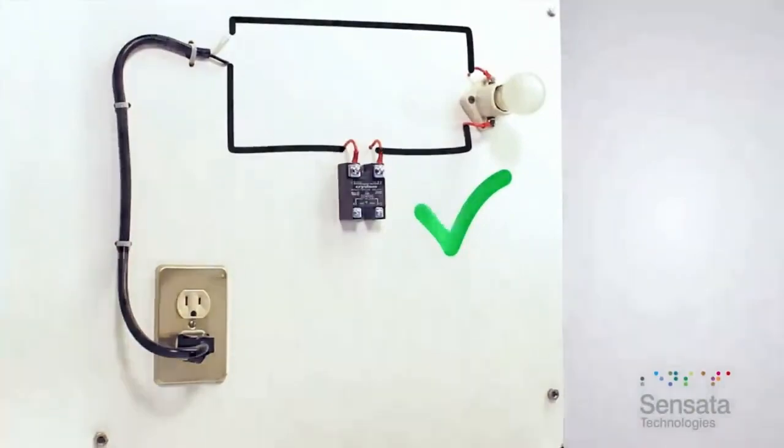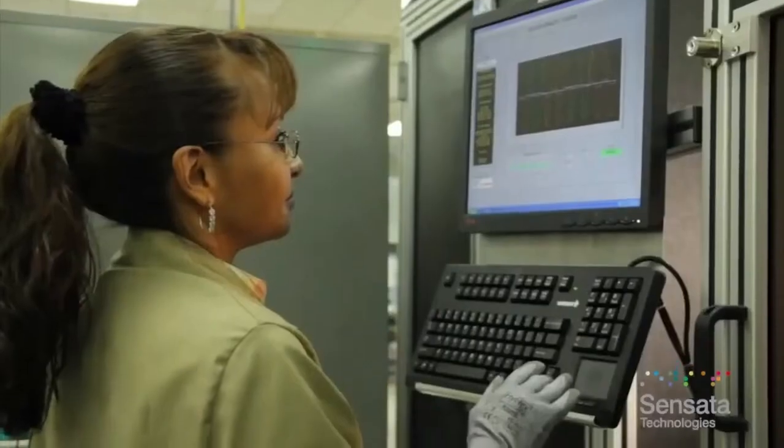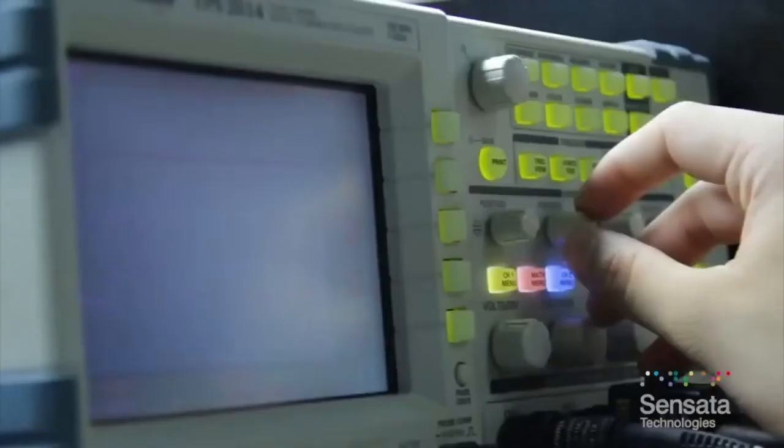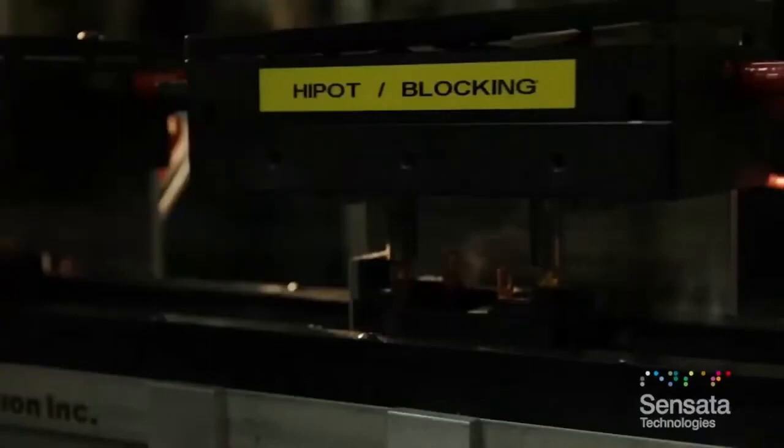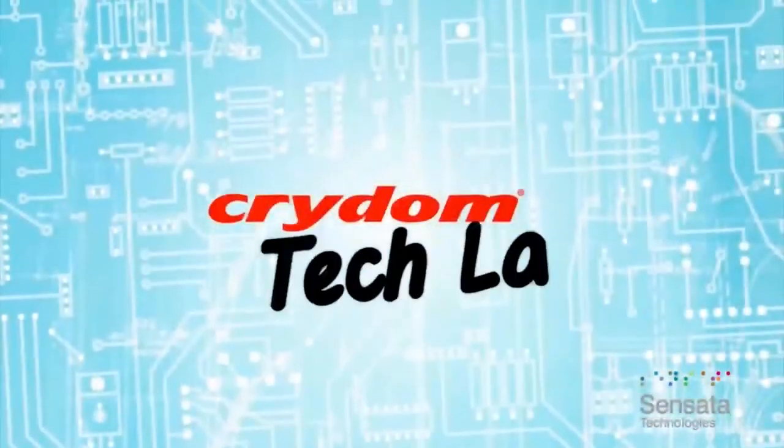Removing and applying the battery should correspondingly flash the lamp on and off. As seen here, this solid state relay passes the basic operational test. There are many more detailed tests that are performed on SSRs at the factory during production, but a simple bench test performed as shown provides a quick indication of SSR operation. We hope this has been helpful. Thanks for watching this edition of Crydom Tech Lab.